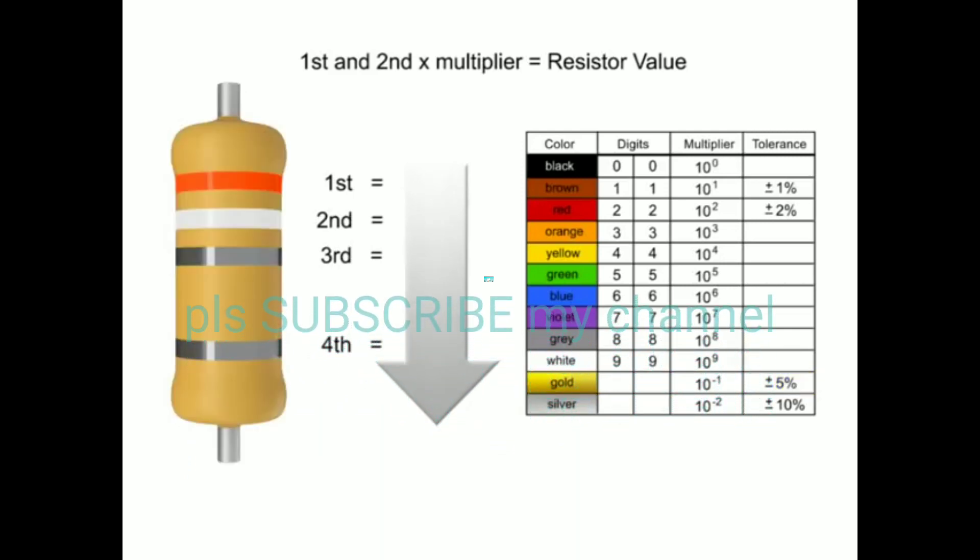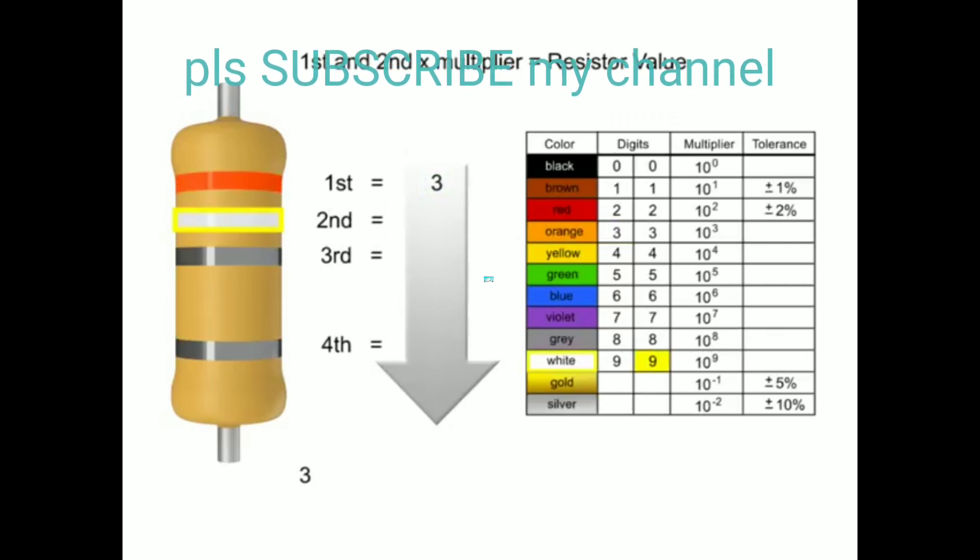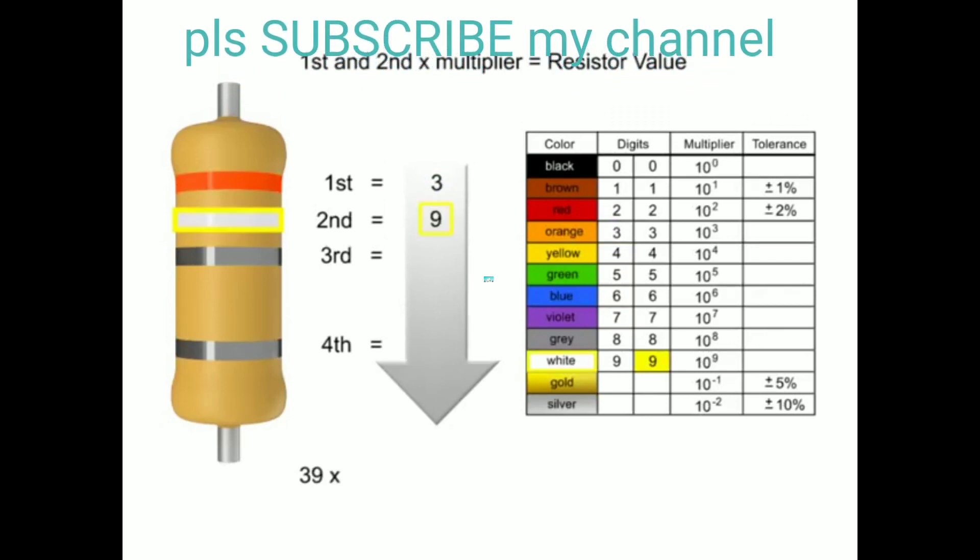In this example, the first band is orange, so the first digit is three. The second band is white, so digit two is nine. The third band is silver, so we multiply the first two numbers by ten to the negative second power or 0.01.